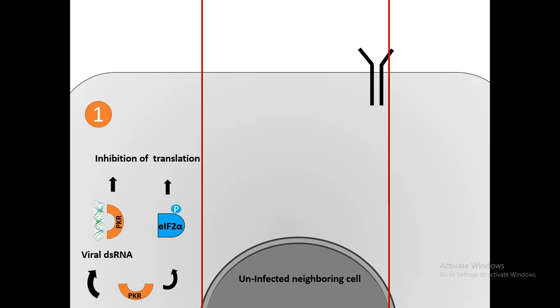So viral translation machineries could be interfered by the interferon-mediated molecules. Second mode of defense is by 2,5-oligo-A synthetase, which can put a mark on the mRNA that would be further degraded by RNase L family, thereby again preventing the viral translation machineries.